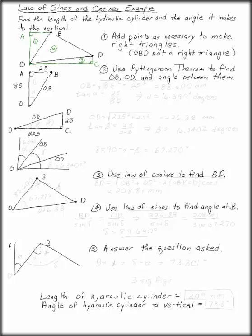Focusing first on number 1, we have 85 from O to A and 25 from A to B. We can use the Pythagorean theorem to find the length OB. OB is equal to the square root of 85 squared plus 25 squared, which is 88.600 millimeters.